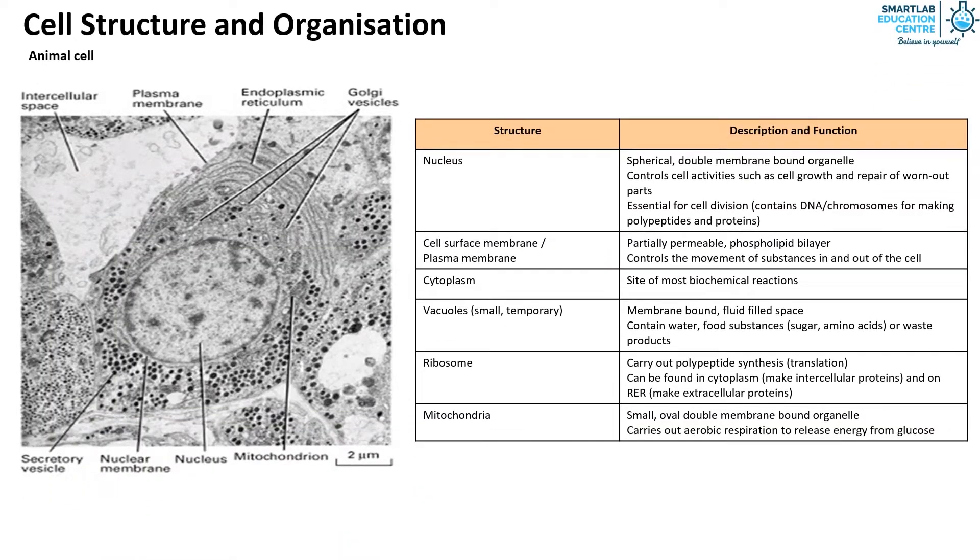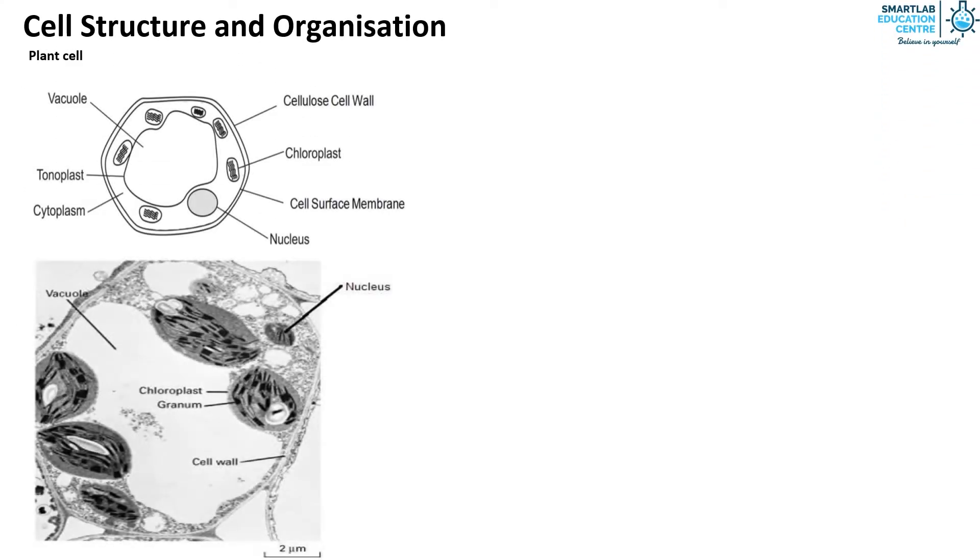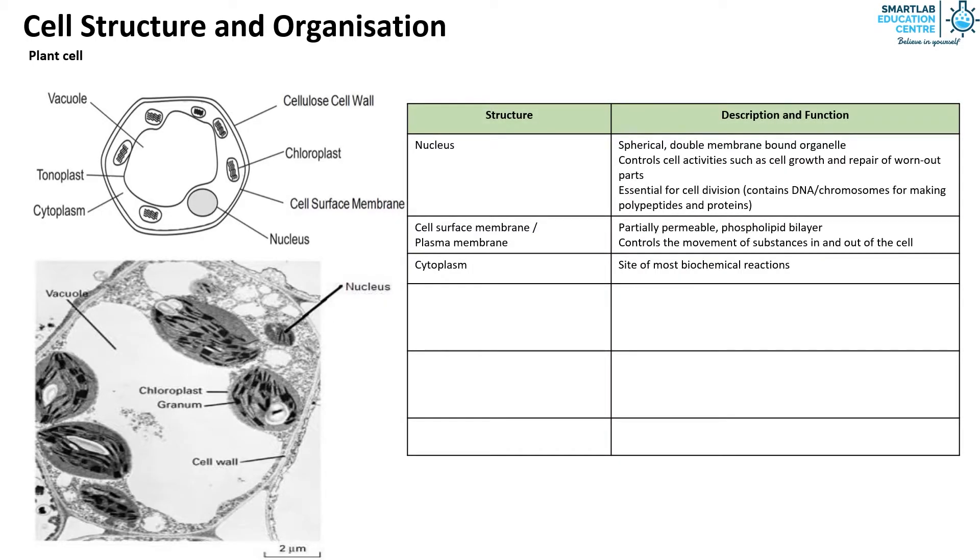This is an electron micrograph of an animal cell. Moving on to plant cells, the nucleus, cell membrane and cytoplasm have the exact same structure and function as shown earlier in the animal cell slides.